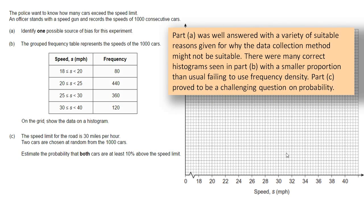Let's have a look at the examiner's remarks. The examiners say that Part A was well-answered with a variety of suitable reasons given for why the data collection method might not be suitable, might be biased. There were many correct histograms seen in Part B, so that was done fairly well, with a smaller proportion than usual, though, failing to use frequency density. But Part C apparently proved to be too challenging a question for people to answer it very well. Not many people got Part C correct.